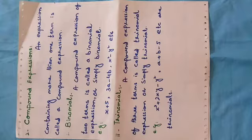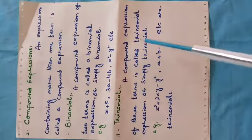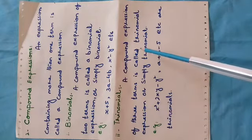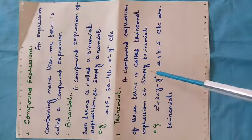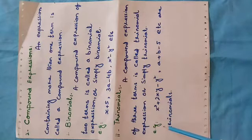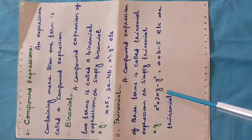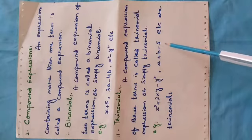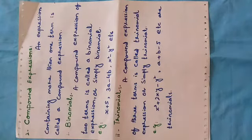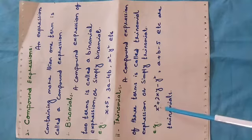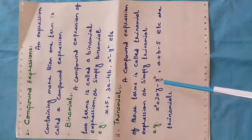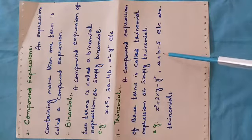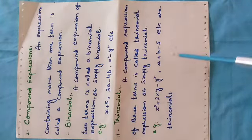Now, trinomials. A compound expression of three terms is called a trinomial expression, or simply a trinomial. For example: x² plus 2xy minus y², and a plus b minus 5 are trinomials. You can see this expression consists of three terms — first term, plus second term, minus third term. So this is called a trinomial.